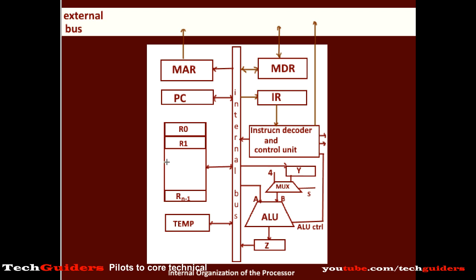These data movements, done in a well-sequenced and timely manner, are carried out with the help of control signals generated by the control unit within the processor. The processor involves a data path — comprising registers, the internal processor bus, and ALU — and a control path which controls this data path with the help of control signals generated by the control unit. Everything that happens within and to and from the processor is done with the help of these control signals.